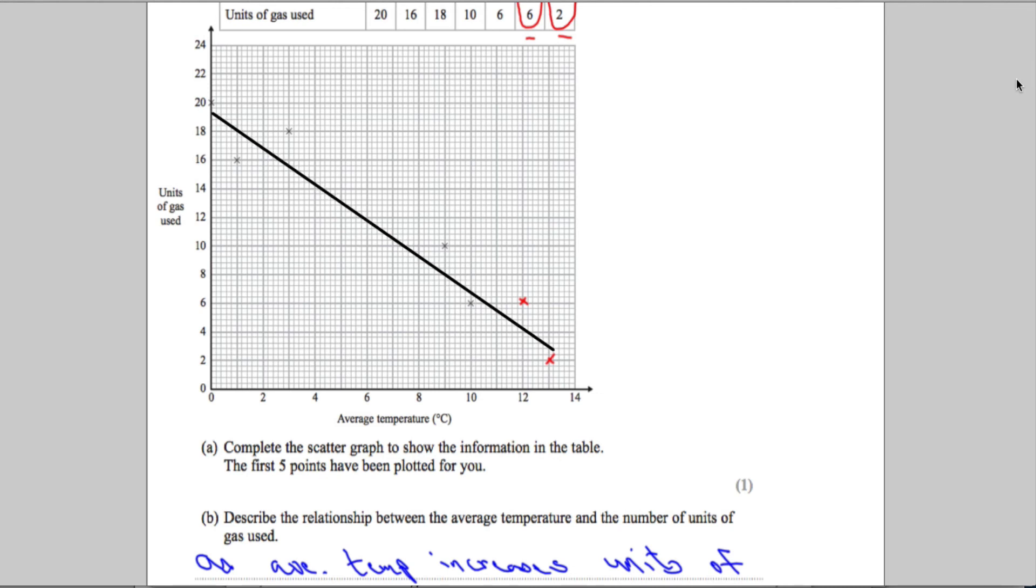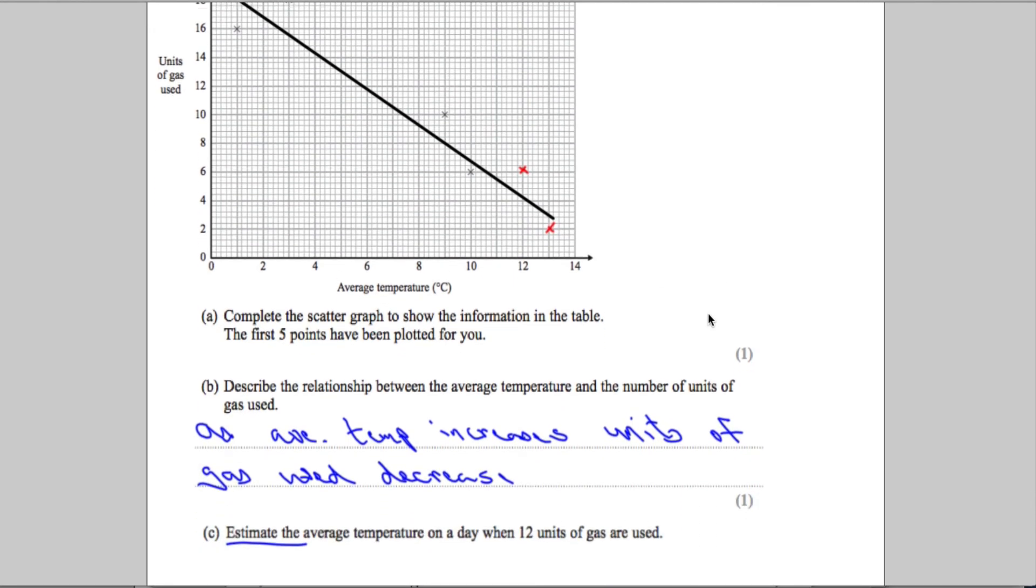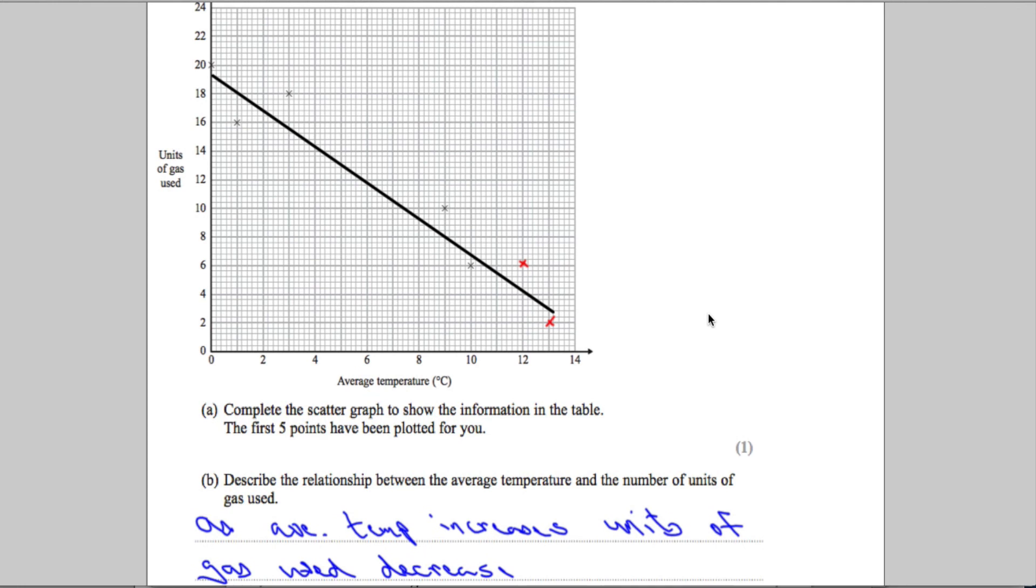On my line of best fit I'm just going to put it roughly around there. Now it doesn't have to be perfect - there is a range of answers they will accept. We're estimating 12 units of gas to find the average temperature, so from 12 units of gas we go across to where our graph is and then down.